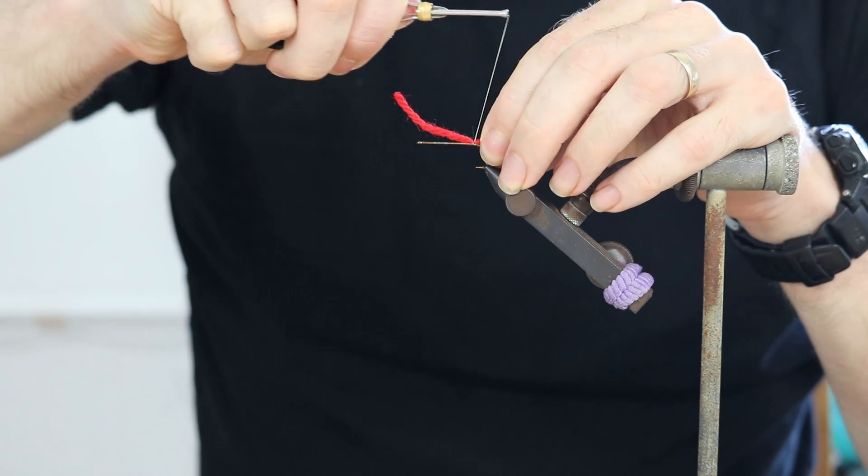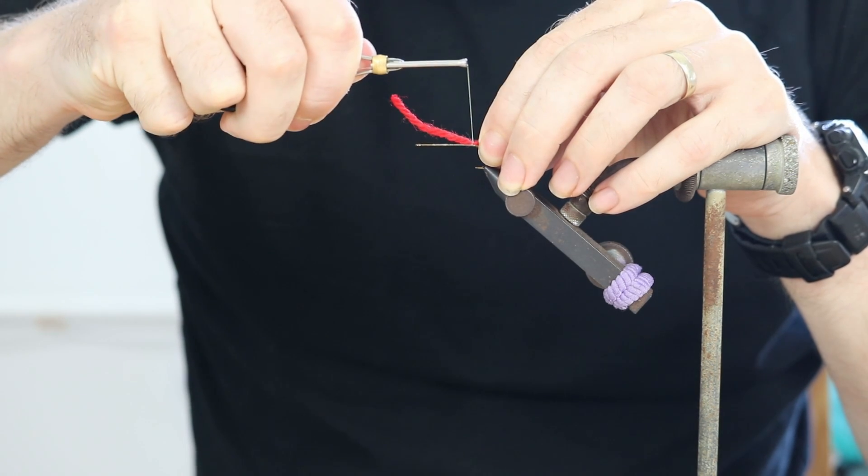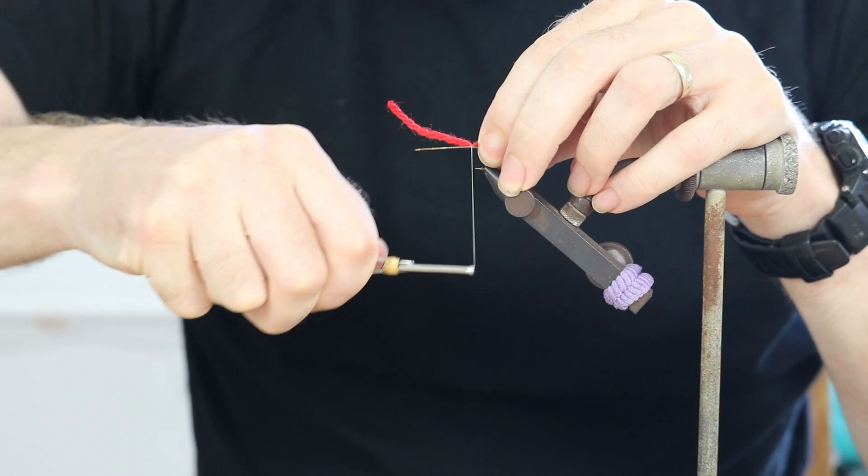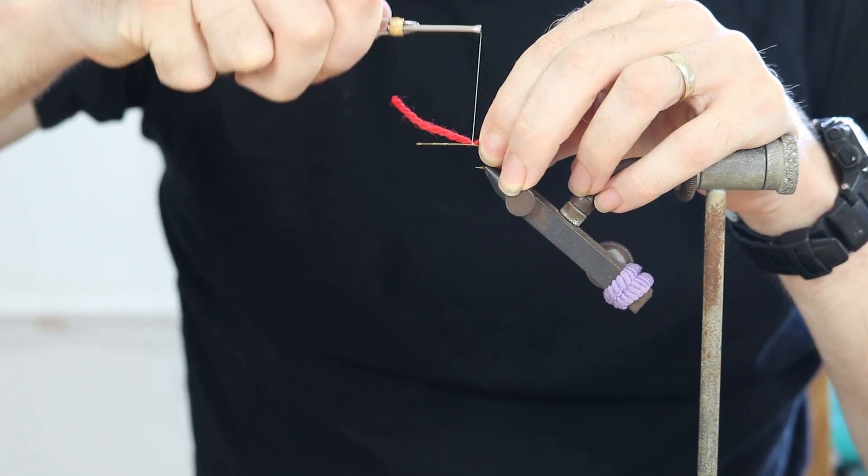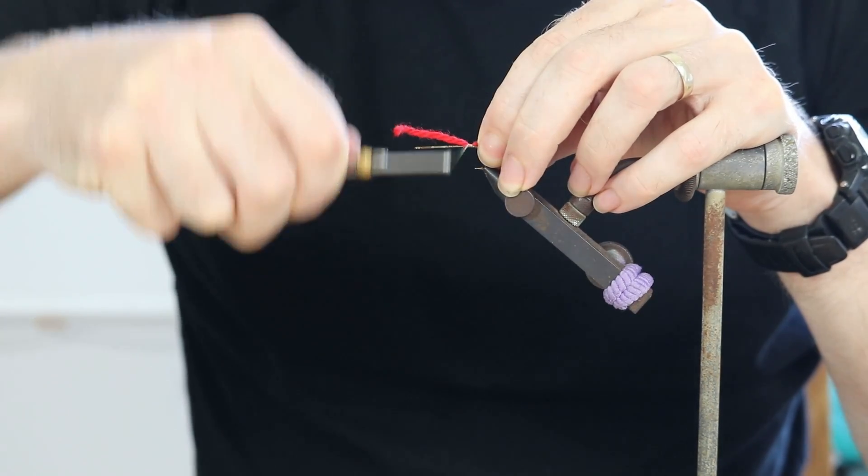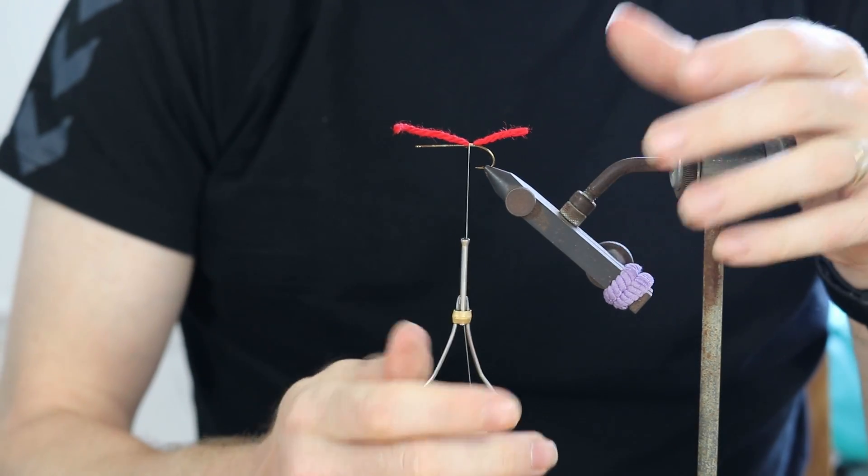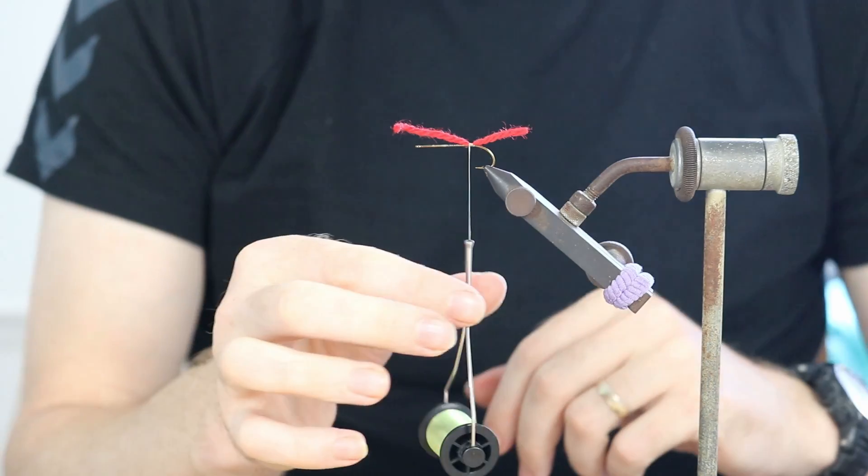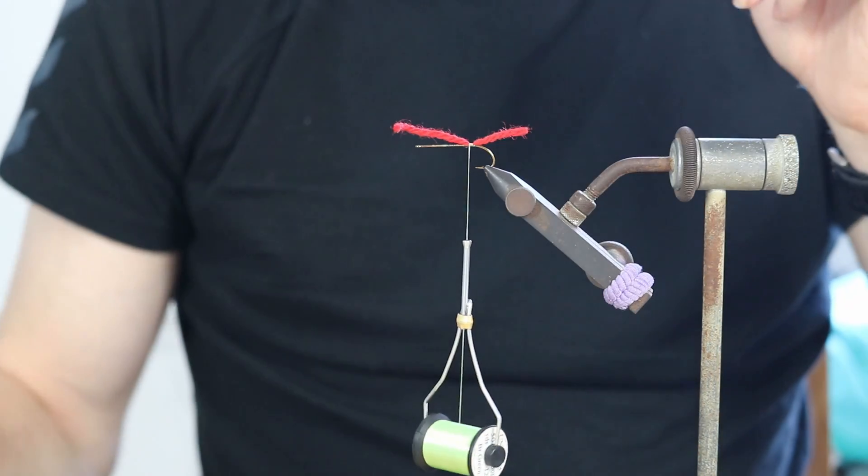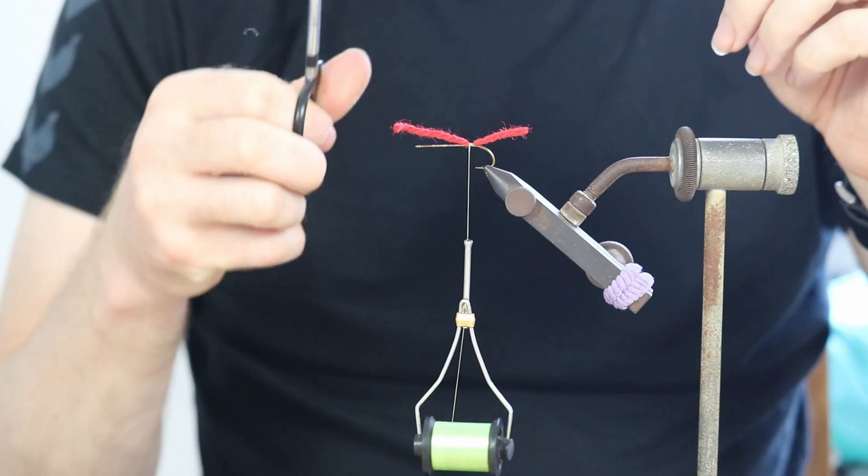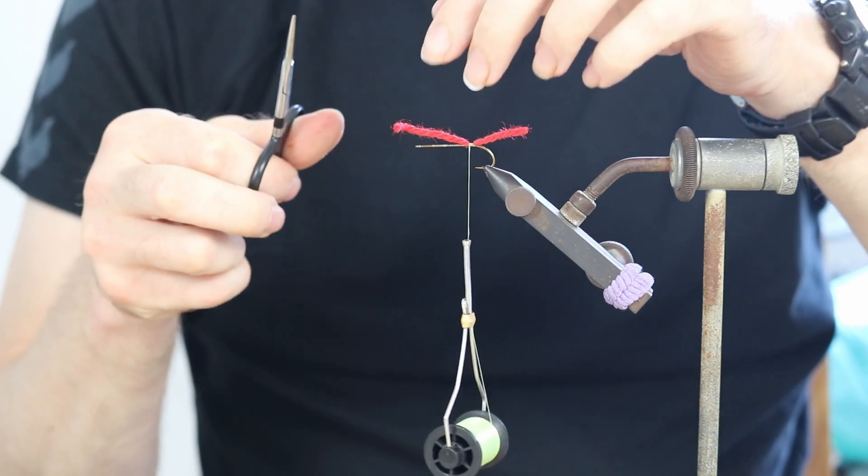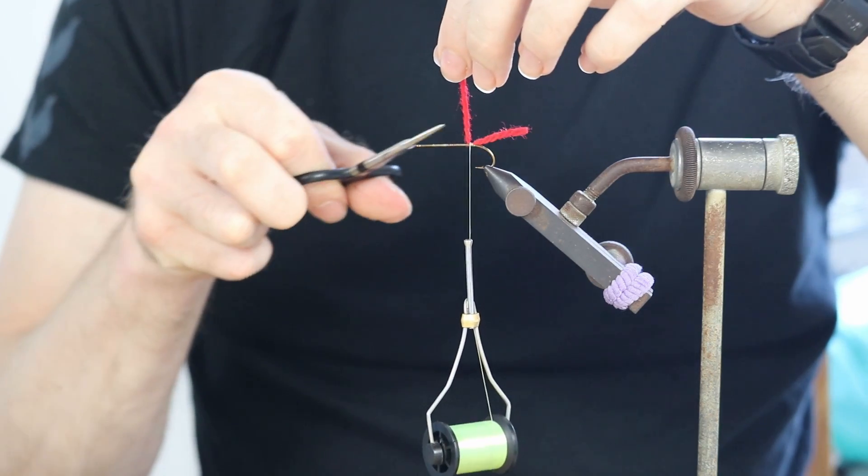And then what I'll do is with tight thread control here, I'll do one, two, three, four, five wraps, tight hard wraps. Now I can let go of the bobbin, I can go in, I can cut off my material.